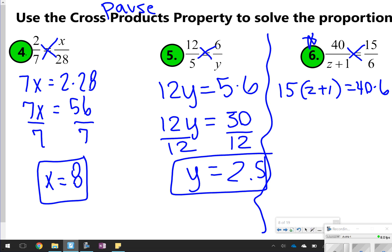So that's 15z, again, we're just doing distributive property here, plus 15, is equal to 40 times 6, which is 240. 15 times z, 15 times 1. Then you're going to use your two-step solving to get z by itself.